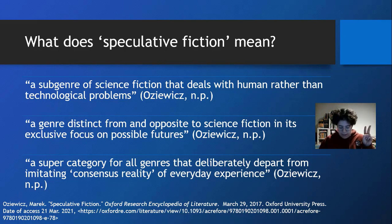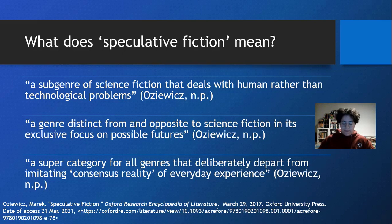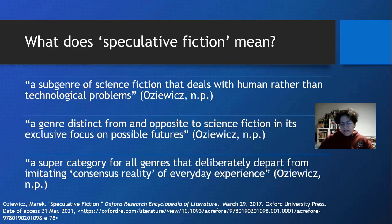Our second possible meaning is a genre distinct from and even opposite to science fiction in its exclusive focus on possible futures. This is close to what Margaret Atwood means when she uses the term, as she views her own fiction as extrapolating from current events which could realistically become true at some point. This seems a bit tricky, as we can't really say what will or will not be possible — don't forget that Star Trek predicted mobile phones.